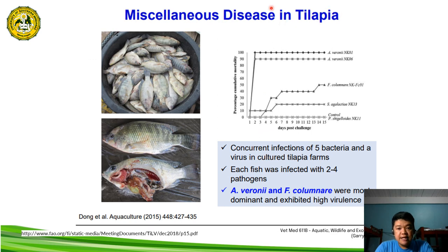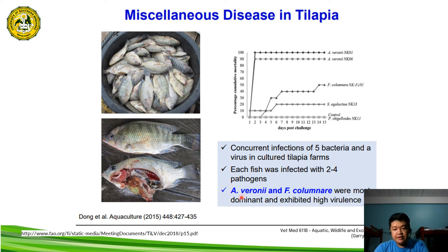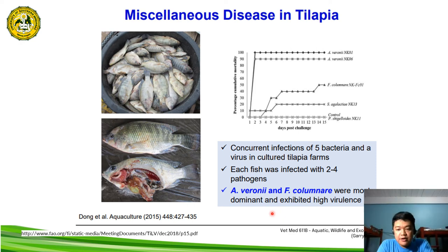For miscellaneous diseases in tilapia, this includes concurrent infections of multiple bacteria and a virus in cultured tilapia. An example is a concurrent infection of Aeromonas veronii and Flavobacterium columnare — the combination was dominant and exhibited high virulence. Some bacterial diseases can be present concurrently with another disease, making the infection more dominant and highly virulent.